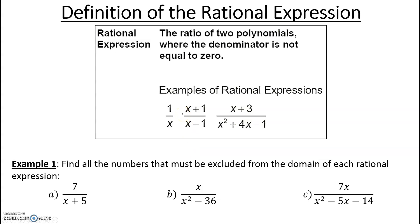So what's a rational expression? It's basically division of two polynomials. You could have one divided by X, or X plus one over X minus one. These are all fractions — division of two polynomials. Now remember, your denominator cannot be zero. You cannot divide by zero. So we're going to talk about understanding the restrictions on your domain throughout this entire section.